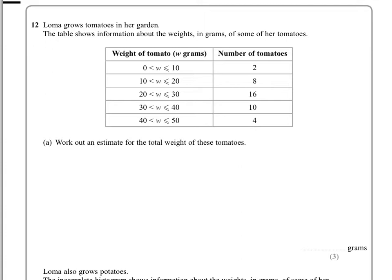Now, the way that we do that when we have a frequency of something in a range is we're saying there's two which are of a weight between 0 and 10. To work out the total weight, we can't multiply it by 10 or by 0. So what we do is multiply it by the midpoint. So the midpoint of 0 and 10 is 5, multiplied by the 2 in that class.